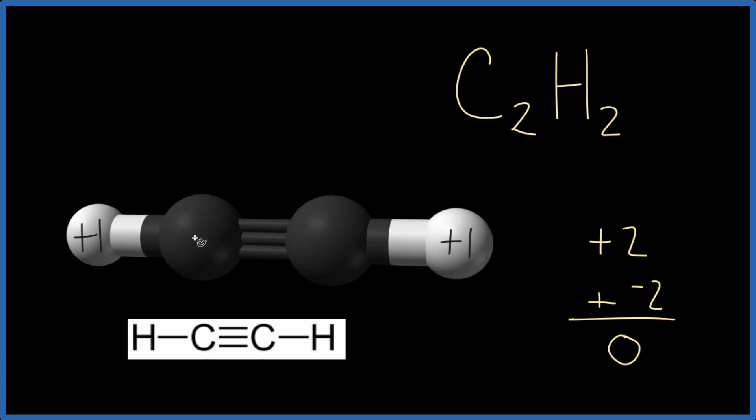So each one of the carbon atoms has to have an oxidation number of minus one. If you add these numbers up, you get zero because C2H2 is a neutral molecule.